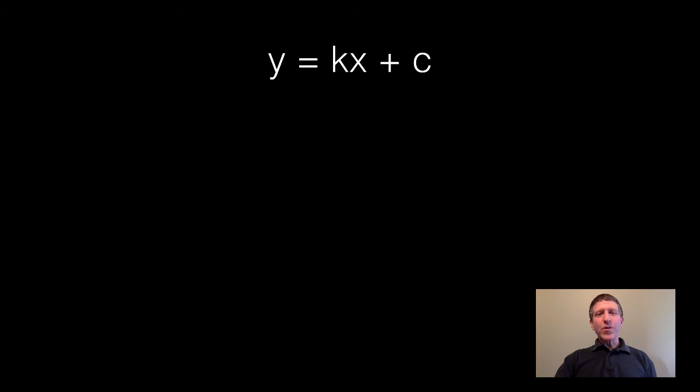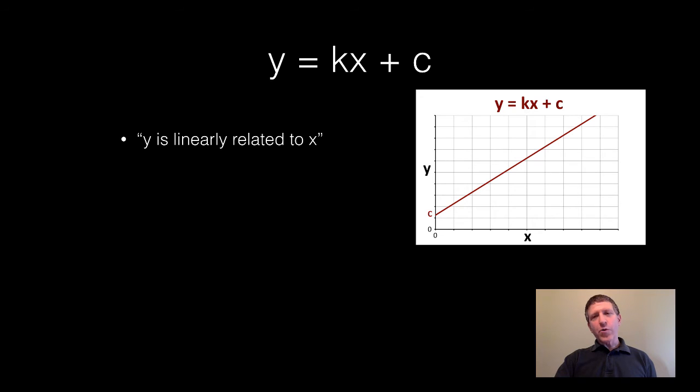Another common relationship is y equals kx plus c. Also phrased as y being linearly related to x. And here's a graph of such a relationship. Notice that it is linear. It's a straight line but it also does not pass through the zero zero or the origin. It's got some non-zero vertical intercept.